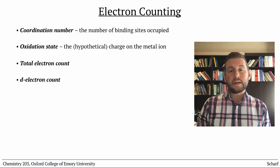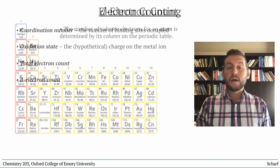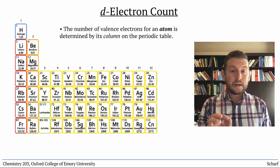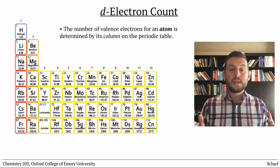We'll start with the d electron count, in part because it's quite straightforward. A particular transition metal atom has a set number of valence electrons based on its position in the periodic table.